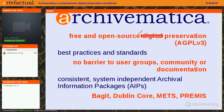Archivematica is free and open source digital preservation. The license is AGPL version 3, so everything we do is free and open — you just have to attribute it. We look forward to community development adding to our work over time. Archivematica is run on best practices and standards. There's no barrier to user groups or to reading any of the documentation needed to develop or use our software. We have consistent system-independent archival information packages, AIPs. OAIS is the standard on which Archivematica has been built, and that's where we get the term archival information packages.